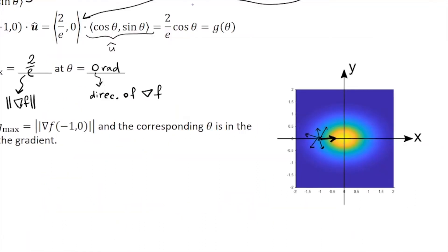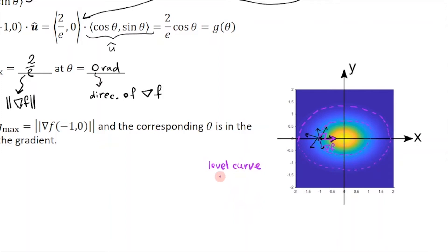I want to make one last comment about this question. Notice that the gradient is pointing in the direction of the function increasing, and specifically in the direction where the function increases the steepest. Also notice that the level curves — the curves along which the value of the function is constant — are ellipsoids. If you look at the level curve passing through the point, the gradient makes 90 degrees with the level curve. This is what you learned in class: level curves are perpendicular to the gradient.